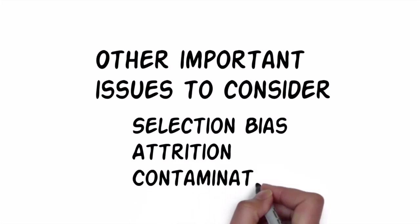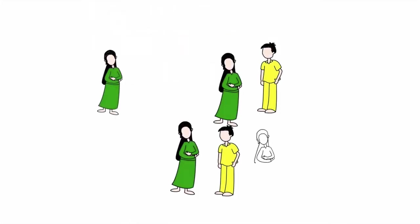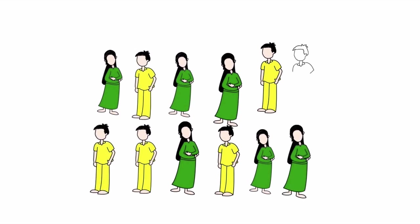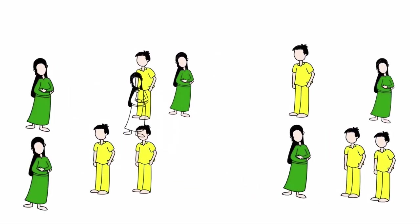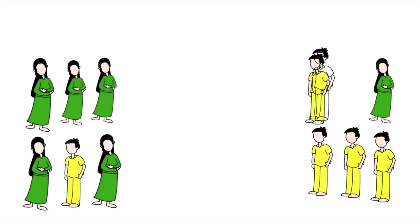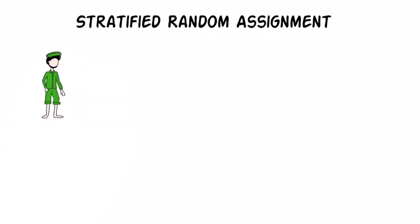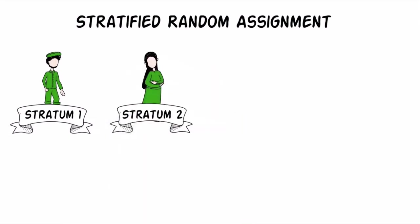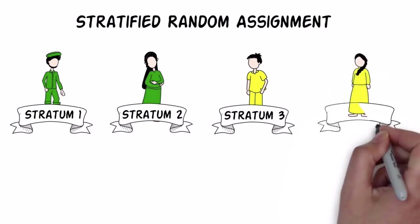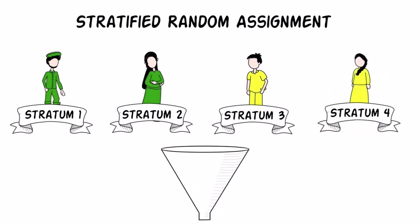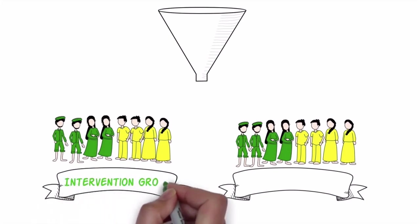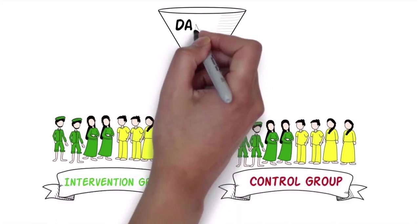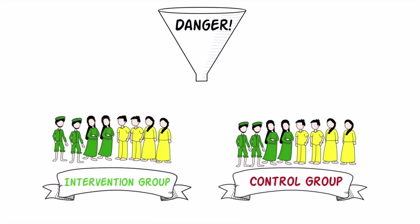Random assignment makes it likely that the groups will be equivalent, but it cannot guarantee it. Simple assignment can sometimes result in groups with an unbalanced spread of characteristics, such as gender, ethnicity or age. We can use stratified sampling — where you purposefully separate out a sample into strata based on a characteristic of interest, for example, different age groups — then randomly assign each stratum, using a forced equal group size. However, there is always a danger that there may be unobserved differences between groups which influence the results rather than the intervention, for example, differences in education attainment.